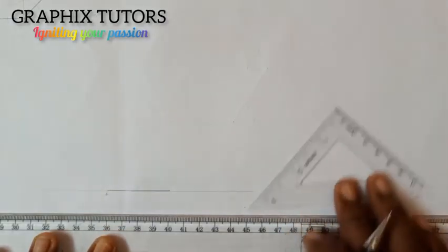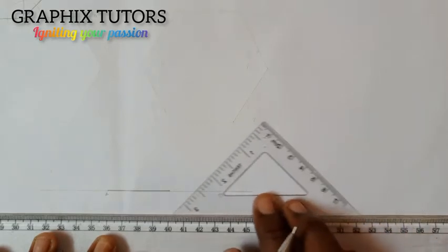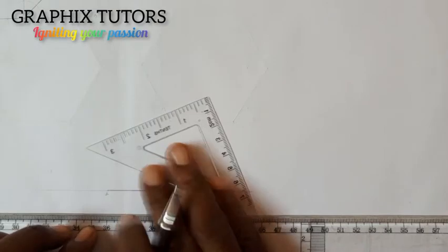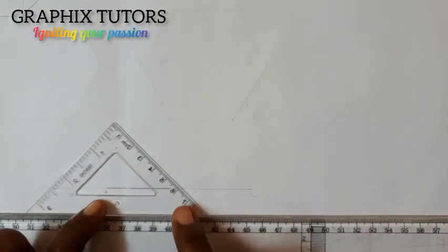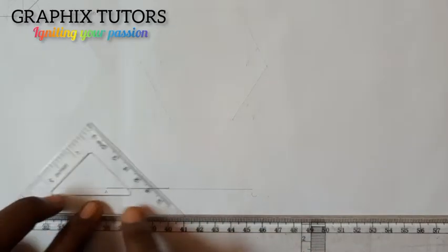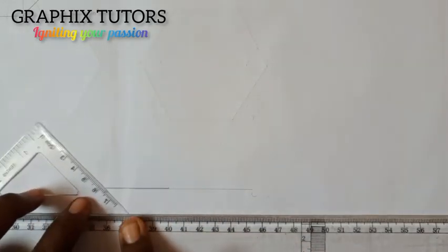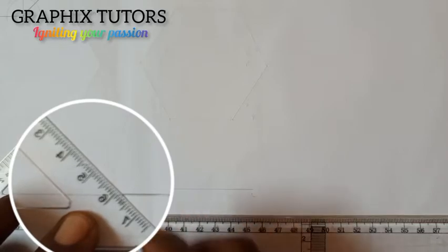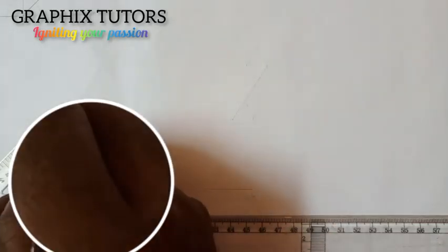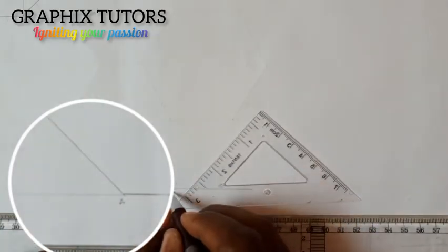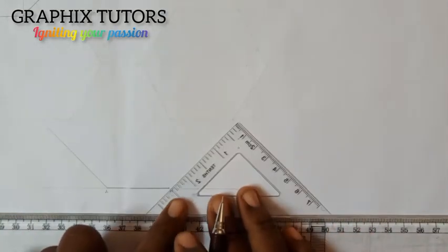I'm going to move it towards point A. Moving it towards point B, this is my point B. I'm going to draw another inclined line this way.